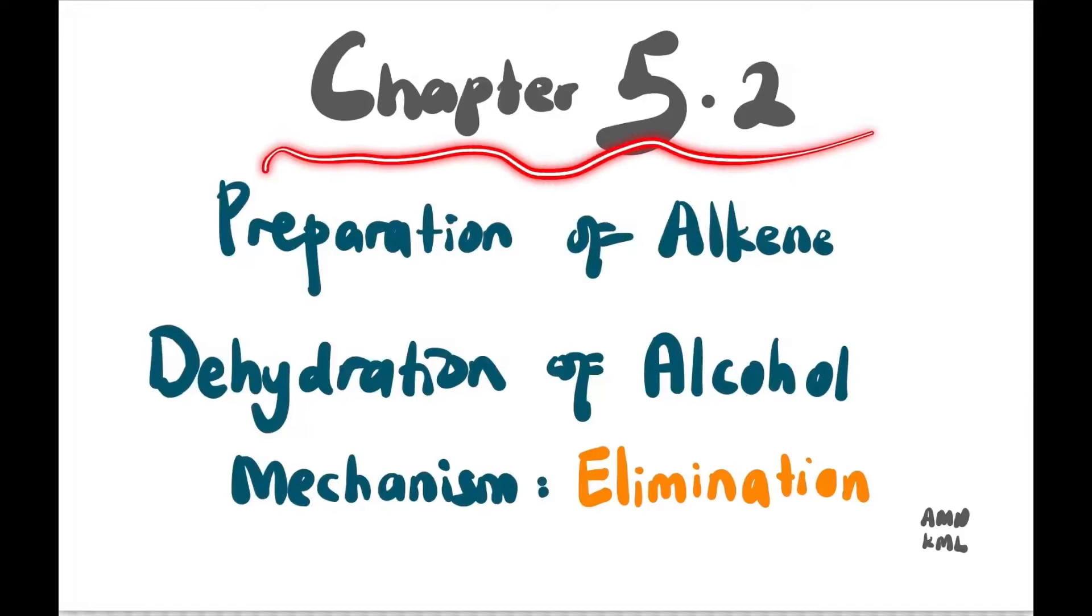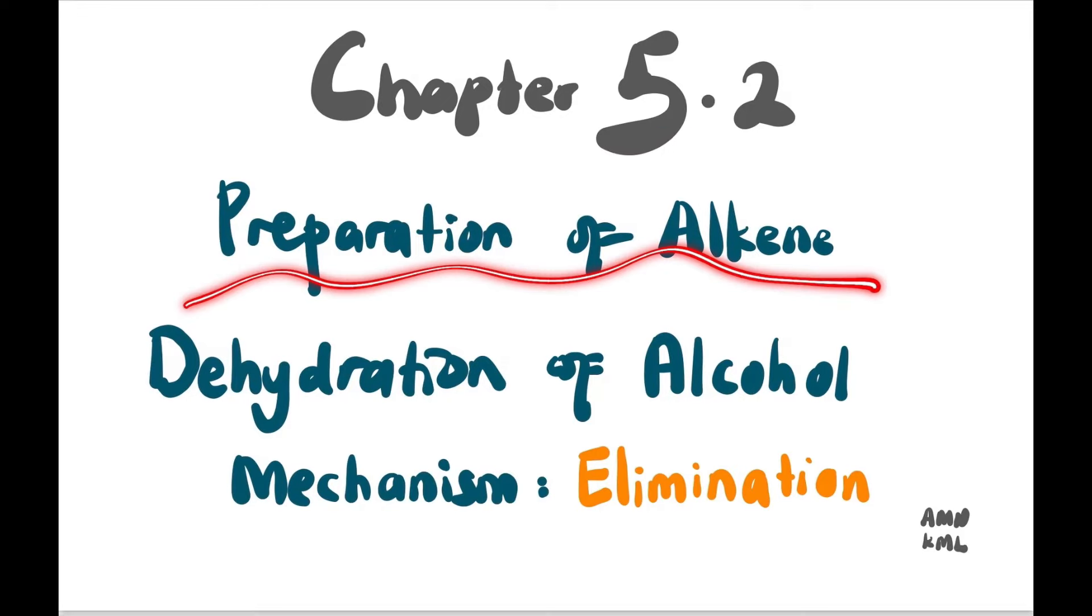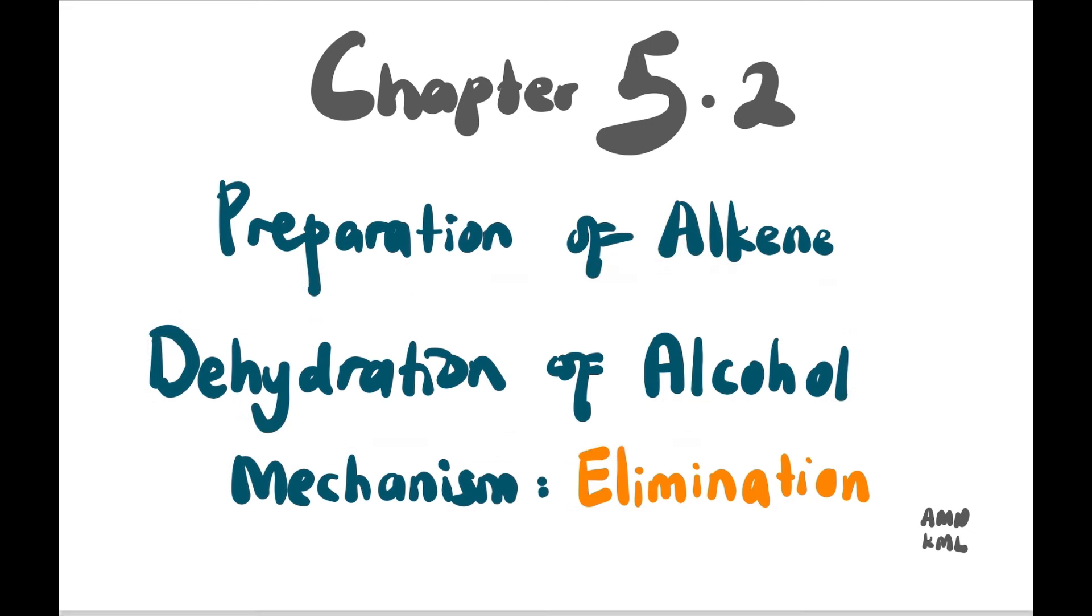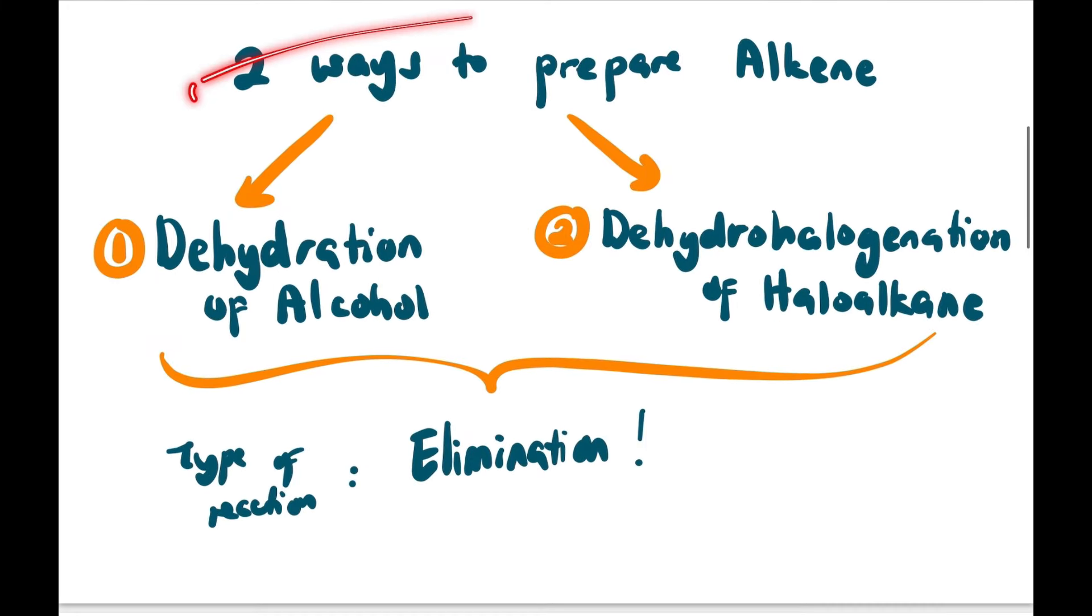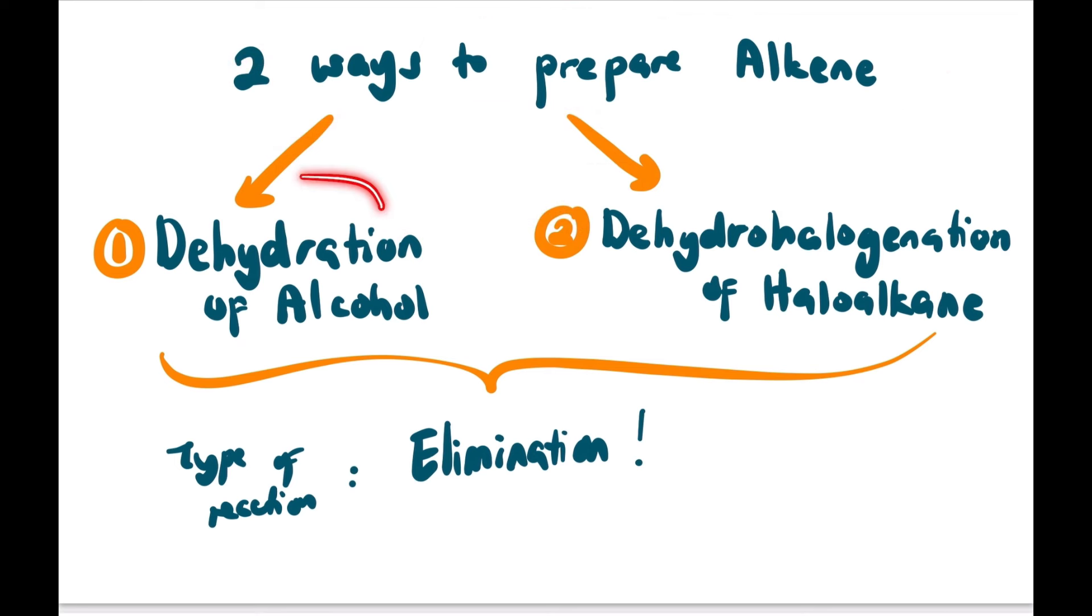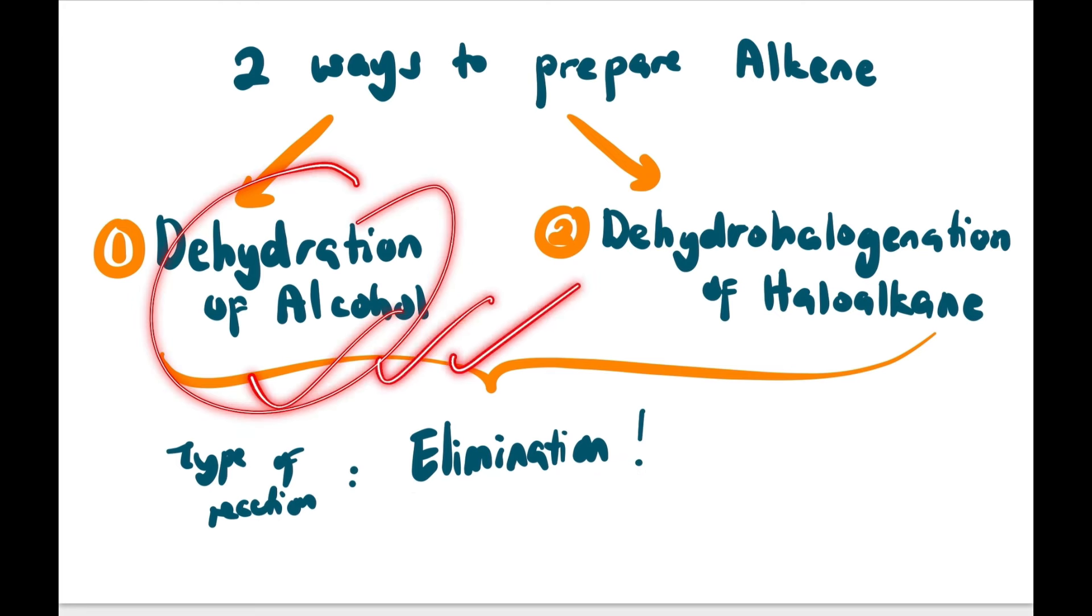Hi guys, welcome back to the channel. Still in chapter 5.2, preparation of alkenes through dehydration of alcohol. This is an elimination mechanism. As you already know, there are two ways to prepare alkenes: through dehydration of alcohol and also through dehydrohalogenation of haloalkenes. Whatever it is, the type of reaction is still elimination. In this particular video, we will focus on the dehydration of alcohol.